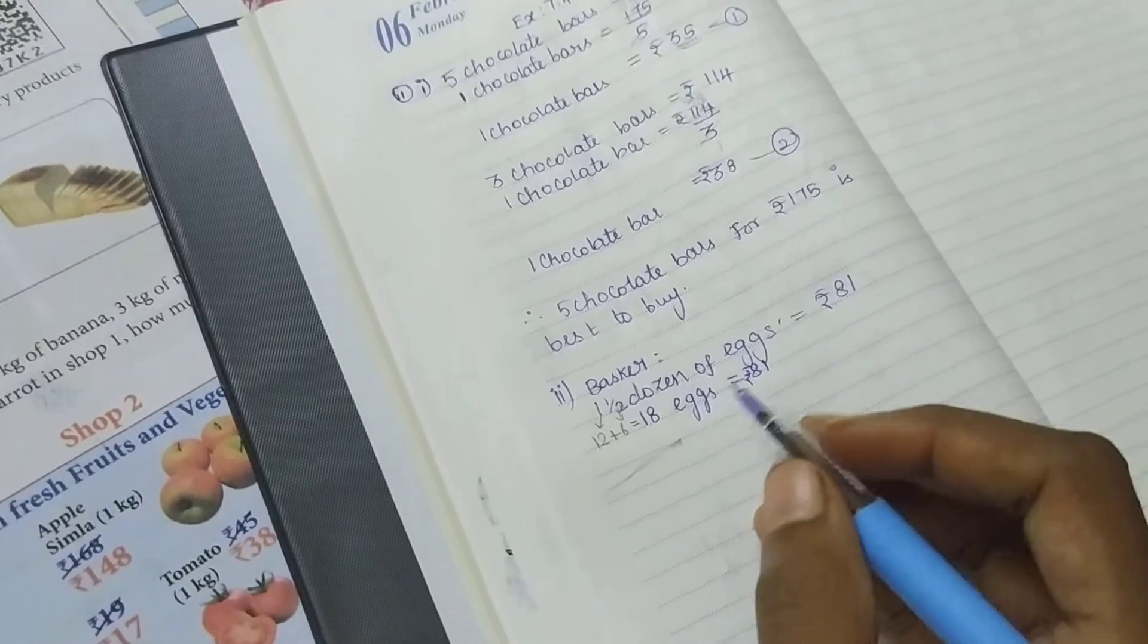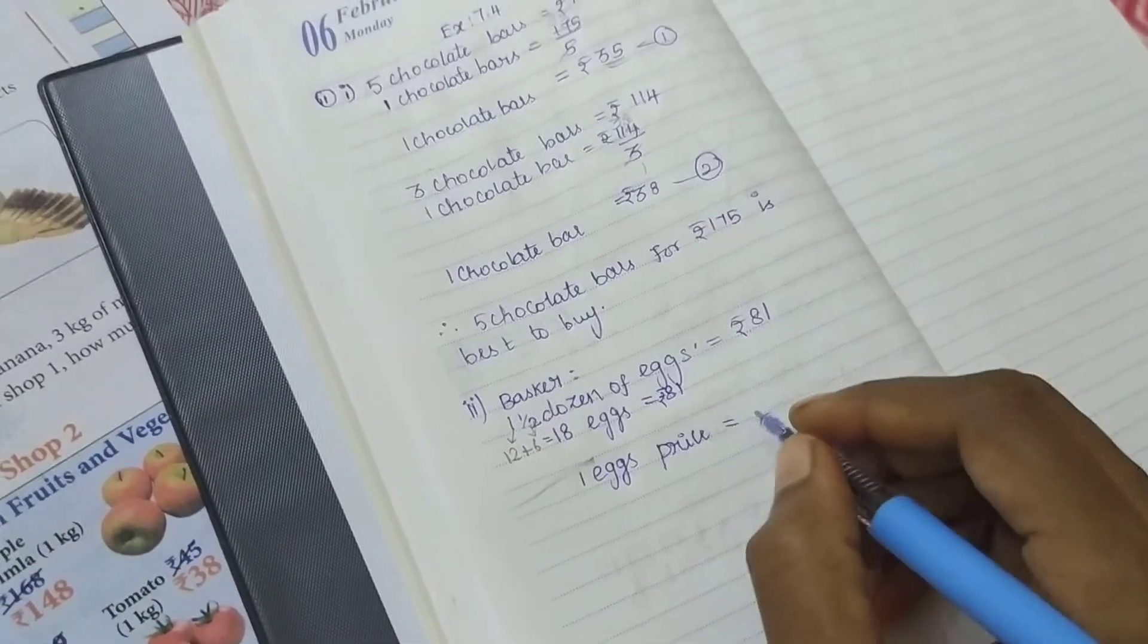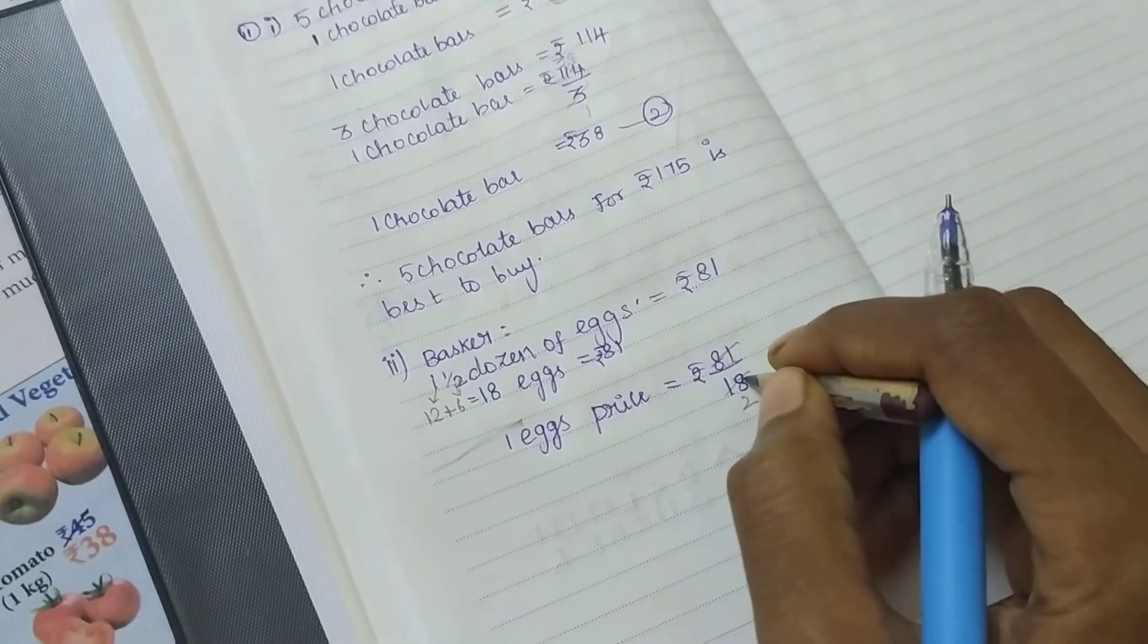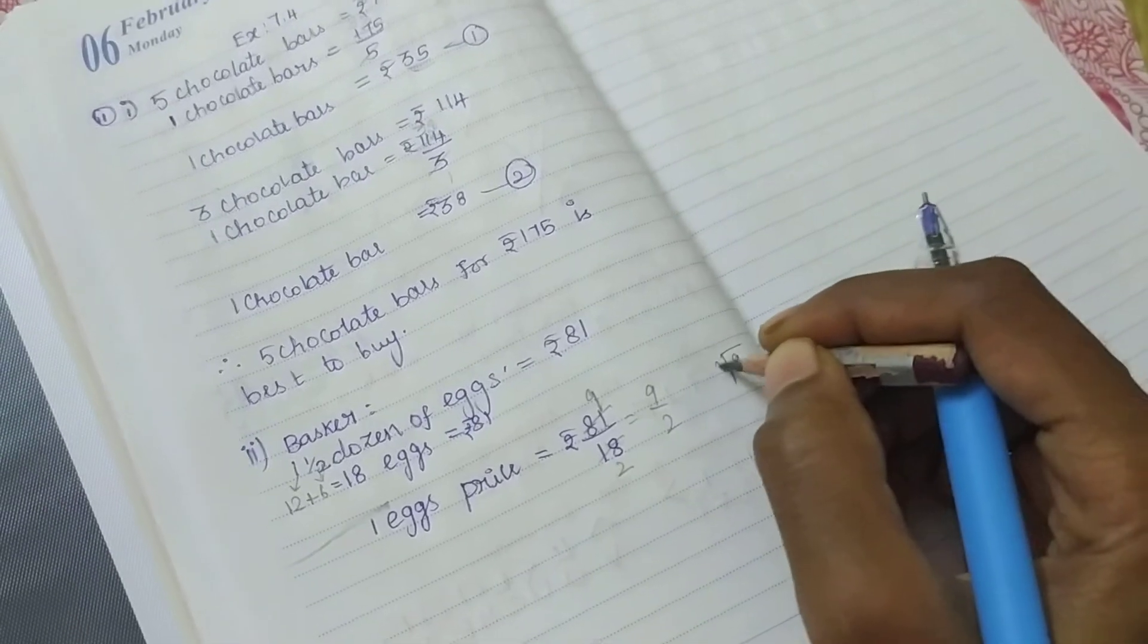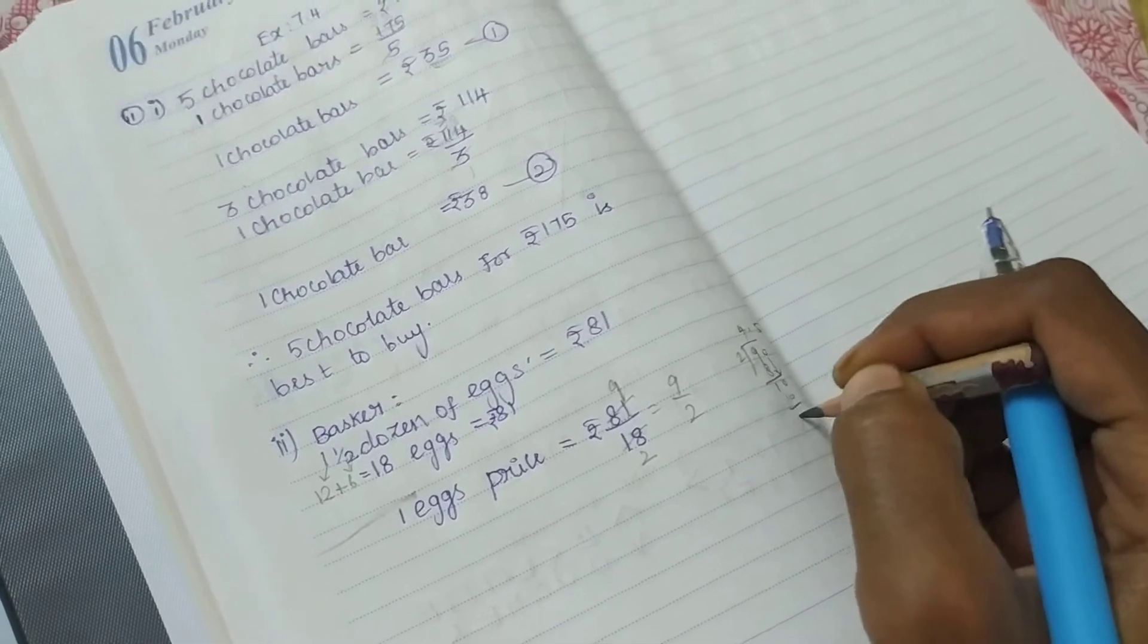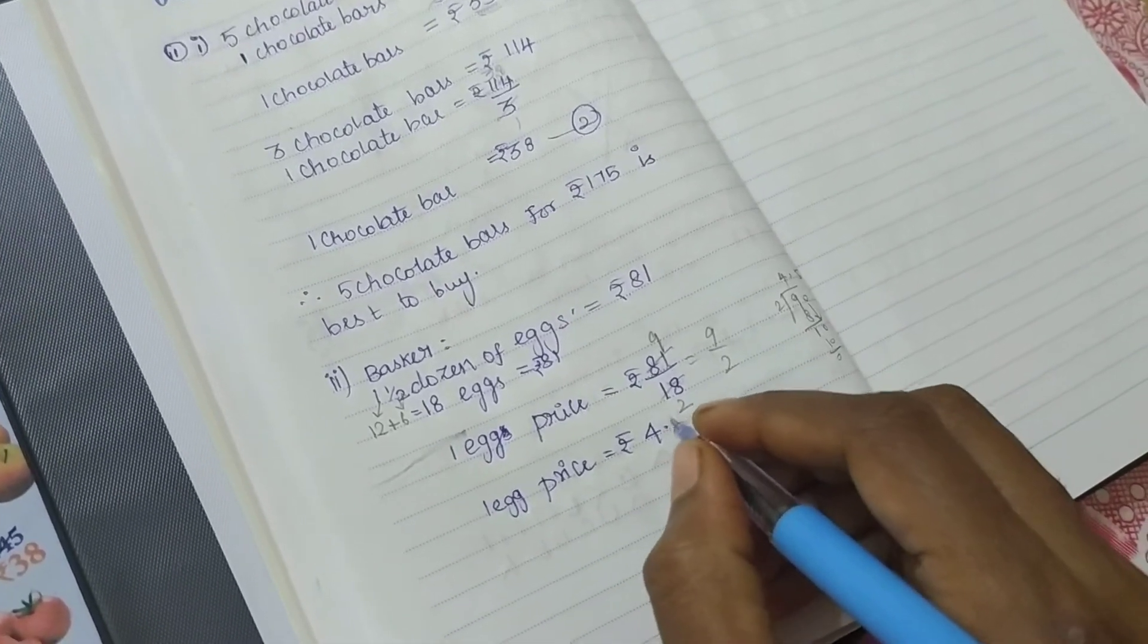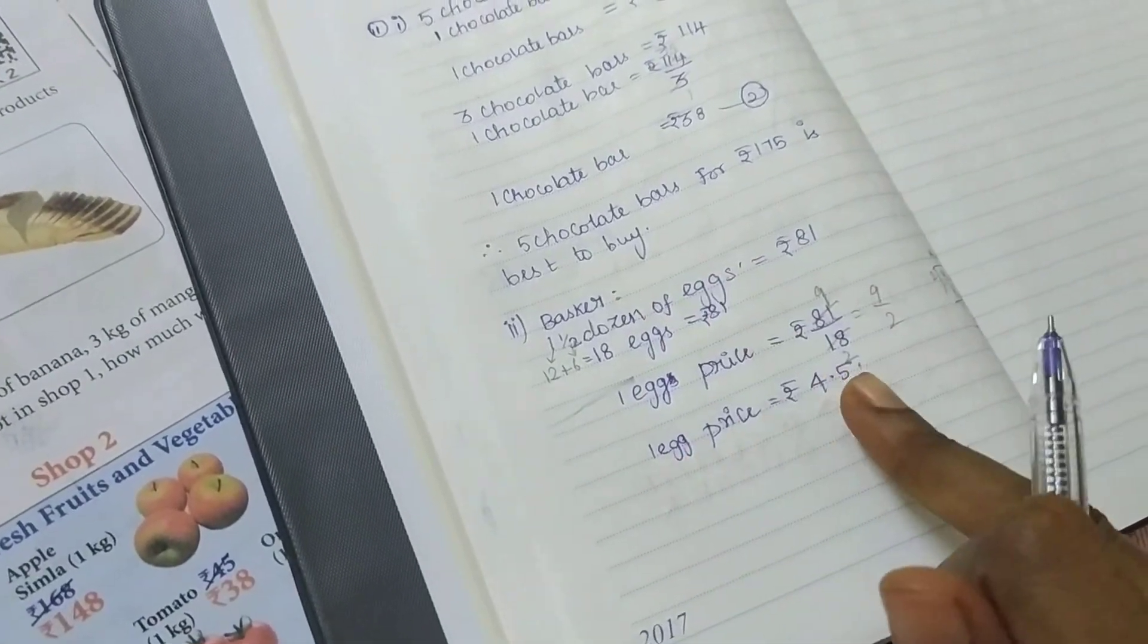One egg's price: 81 divided by 18. I can cancel using the 9 times table. 81 is 9 times 9, so we get 9 divided by 2, which equals 4.5. So Basket is buying one egg for 4.5 rupees.